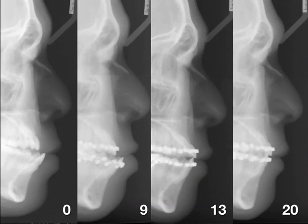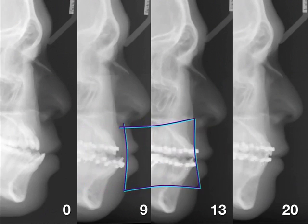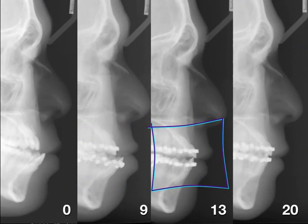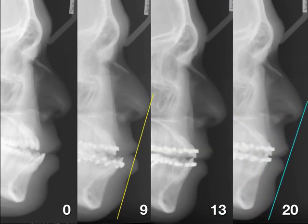Coming back to the cephalometric superimposition, you will see the big negative overjet — and four months later it becomes normal. Finally, at 20 months, we are almost done and the profile has changed a lot. What is the secret for this case?